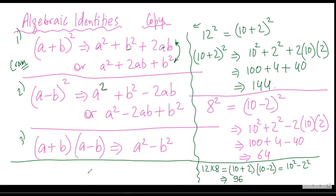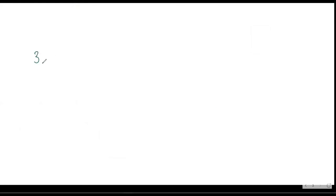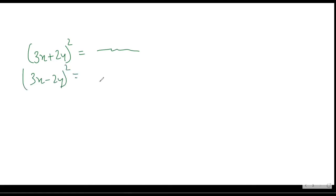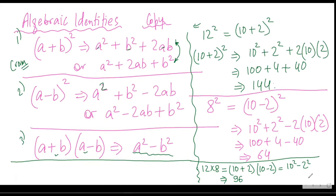No sir. And the third identity is (a + b) into (a - b) is equal to a² - b². Any doubt about this? No doubt. Usually what we do is, once we have these identities, we start doing something like (3x + 2y)² is equal to, then (3x - 2y)² is equal to, and then (3x + 2y) into (3x - 2y). But to make things easier, what I suggest is that we try to do questions like these.